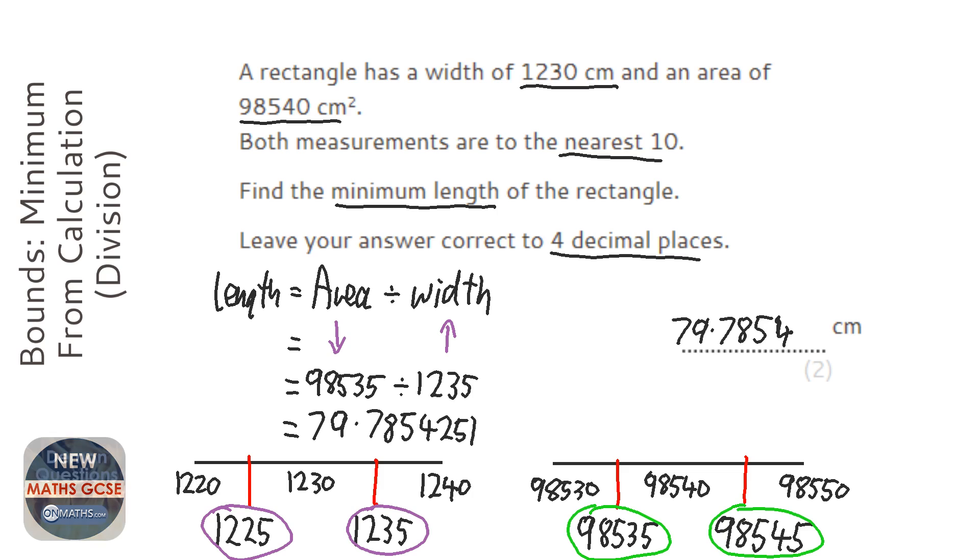Now if you're not sure about which way around to put them, lower bound, upper bound, just try the different combinations and see which one gives you the smallest answer. So if you're looking for the minimum possible length, it's lower bound divided by upper bound. Similarly, if you're looking for the maximum length, it would be upper bound divided by lower bound.